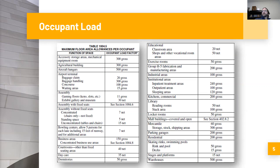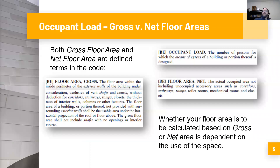One thing you may not know, because it doesn't say it in this table, is that these terms are actually defined in the code. Both gross floor area and net floor area are defined terms. If you go to the definitions section of the code — that's Chapter 2 — you can see that floor area gross and floor area net are defined.